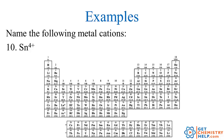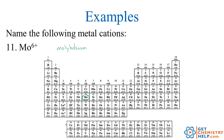Tin 4 positive — tin is not in group 1, not in group 2, and not in the magic triangle, so we have to specify. It's 4 positive, so we use Roman numeral IV — the tin(IV) ion. Finally, Mo 6 positive. Mo is molybdenum. It's not in group 1, not in group 2, and not in the magic triangle, so the charge can vary and we need a Roman numeral. It's 6 positive, so we put Roman numeral VI — the molybdenum(VI) ion.